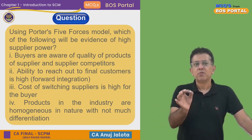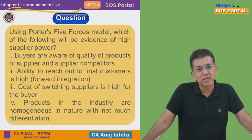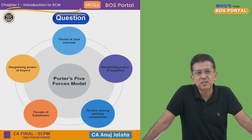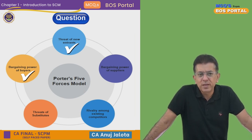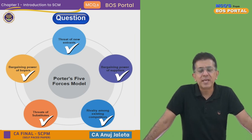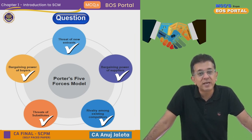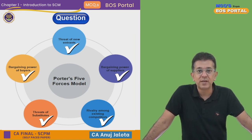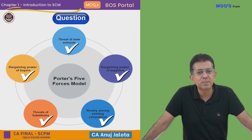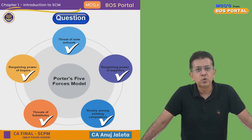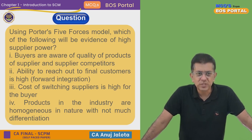For those who don't know: Porter's Five Forces model was made by Michael Porter. He stated that profitability and competition in an industry depend upon five factors: threat of new entrants, bargaining power of buyers, threat of substitutes, rivalry among existing competitors, and bargaining power of suppliers. If a supplier has more bargaining power, he will supply raw materials at a higher rate, reducing your profit.